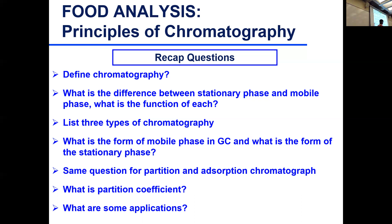In gas chromatography, the mobile phase is a gas. The stationary phase must be a solid, and sometimes you have a liquid bound to that solid — a solid support and a liquid. This is sometimes called gas-liquid chromatography.